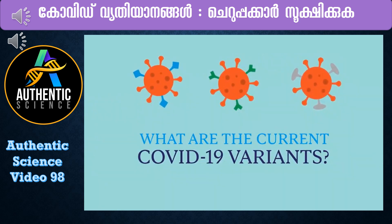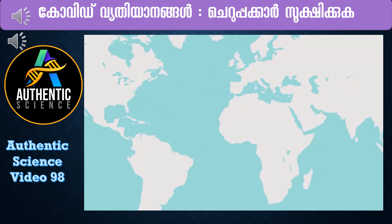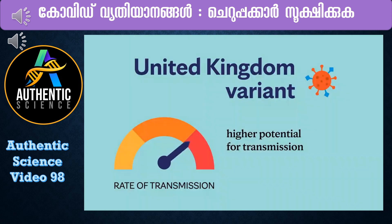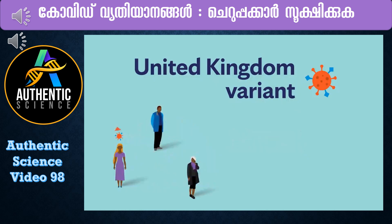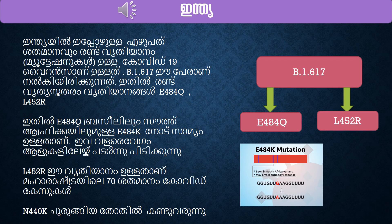First of all, there are three mutations in the United Kingdom variant, South African variant, and Brazilian variant. The COVID-19 virus variant is known by the name B.1.617.